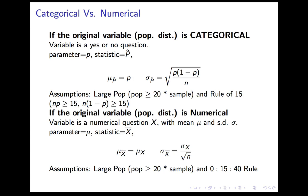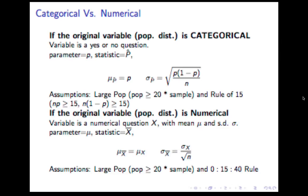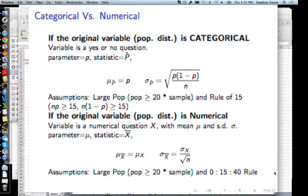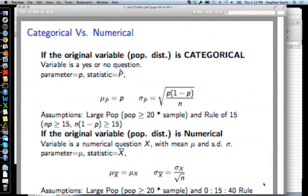For the numerical case, the mean of x-bar is the mean of x. The standard error of x-bar is the standard deviation of x over the square root of n. The assumptions are simple random sample, large population — which is the same — and the 0-15-40 rule: either x is known to be normal, or n is at least 15 and x is not too skewed, or n is at least 40. Rule of 15 for categorical, 0-15-40 rule for numerical. That concludes the lecture.